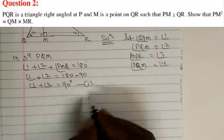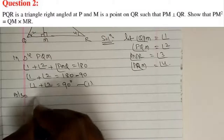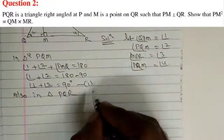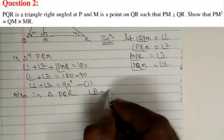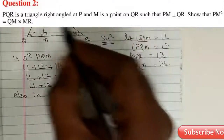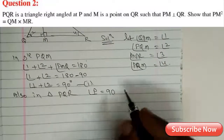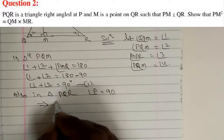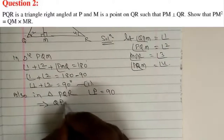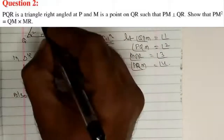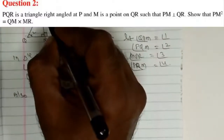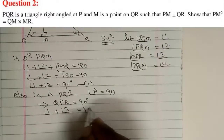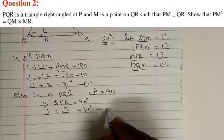Also, in triangle PQR, angle QPR is given as 90°. This angle QPR includes both angle 1 and angle 3 together, so angle 1 plus angle 3 equals 90°. We call this Equation 2.